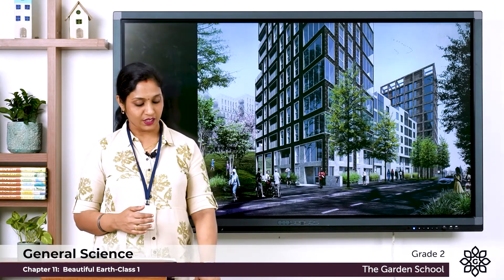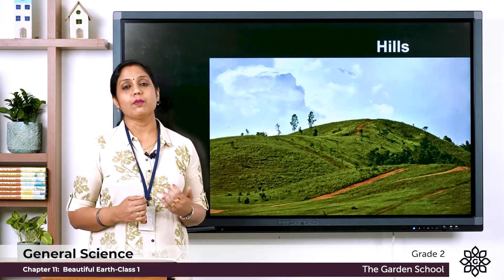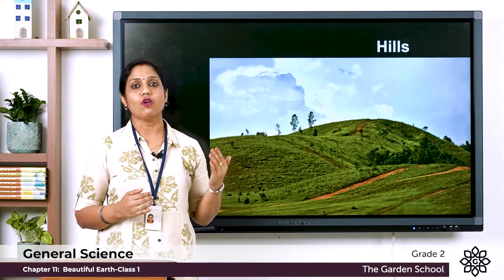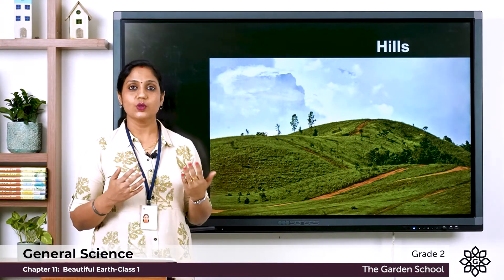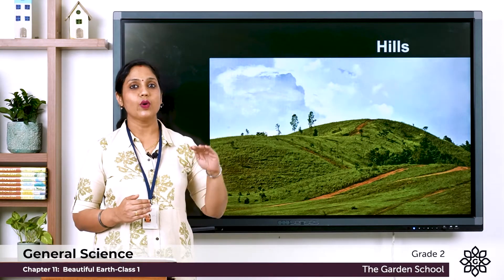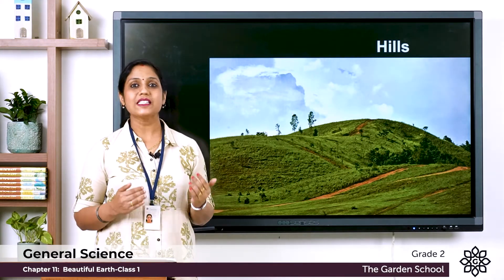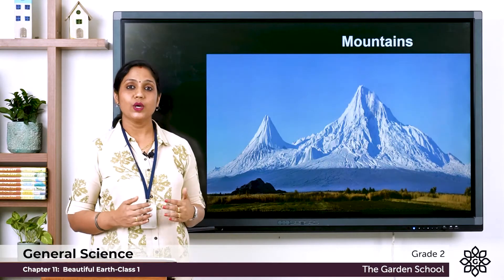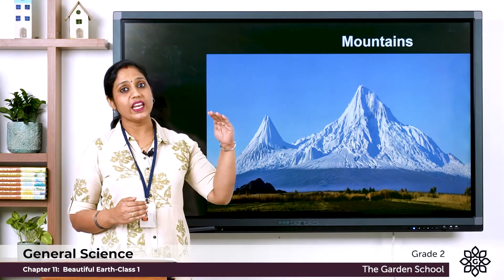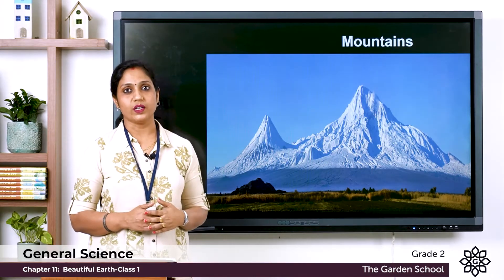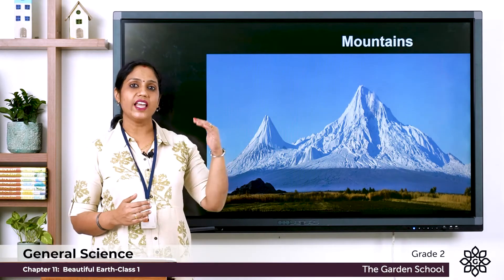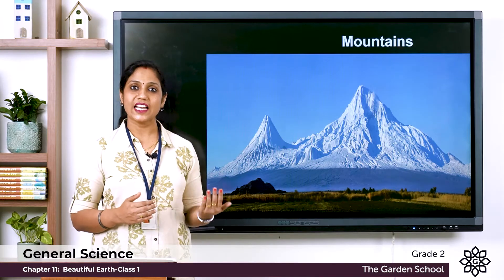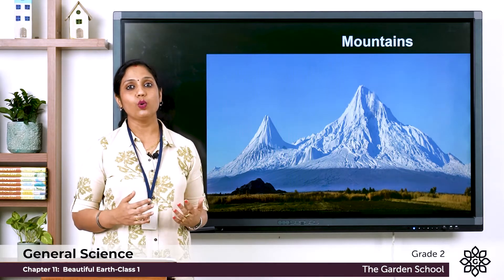Next, let's learn about hills. When the land rises, it forms a hill. When the land rises very high, we call it a mountain. So mountains are high hills. The weather on hills and mountains is very cold and windy, so people have to wear woolen clothes to protect themselves.